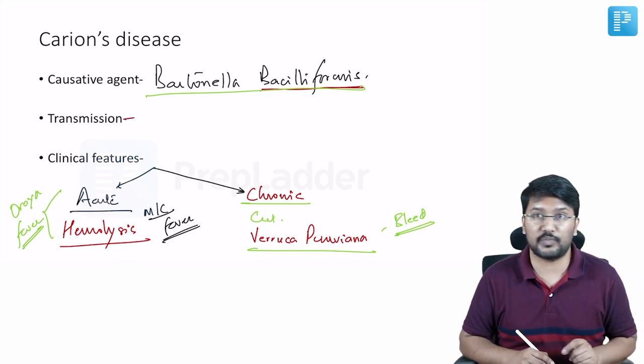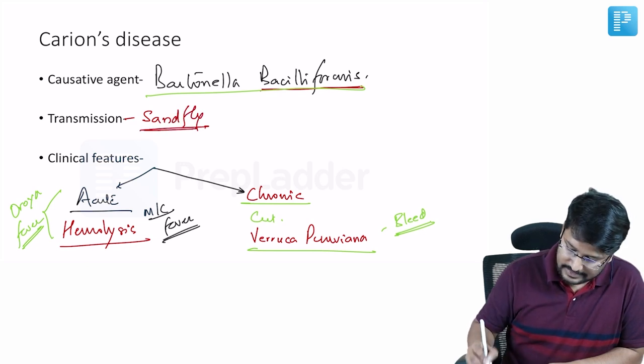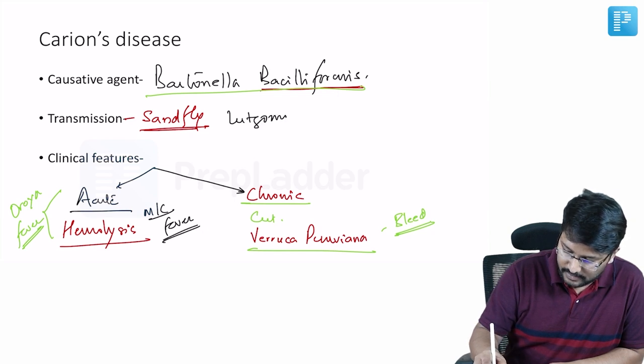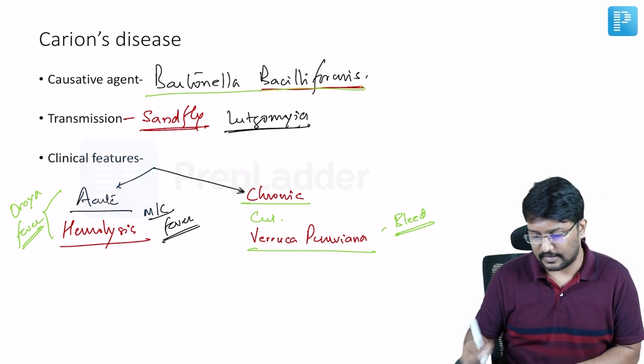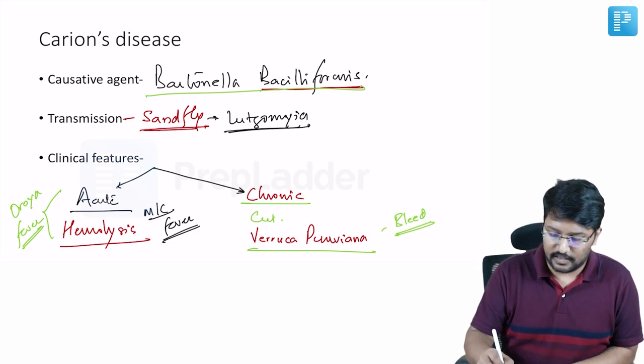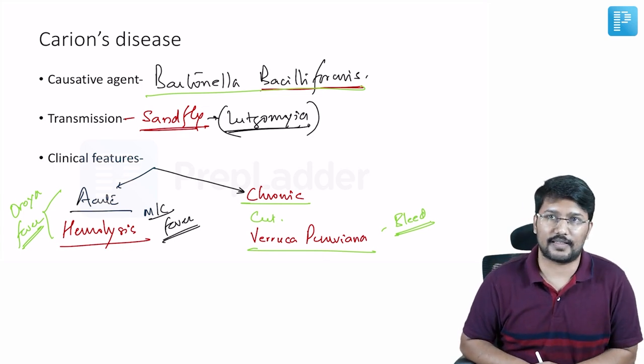How is it transmitted? It is transmitted through sandfly. It is transmitted through sandfly belonging to genus Lutzomyia, belonging to this genus Lutzomyia. So sandfly more precisely Lutzomyia are the ones which act as the vector for this disease.